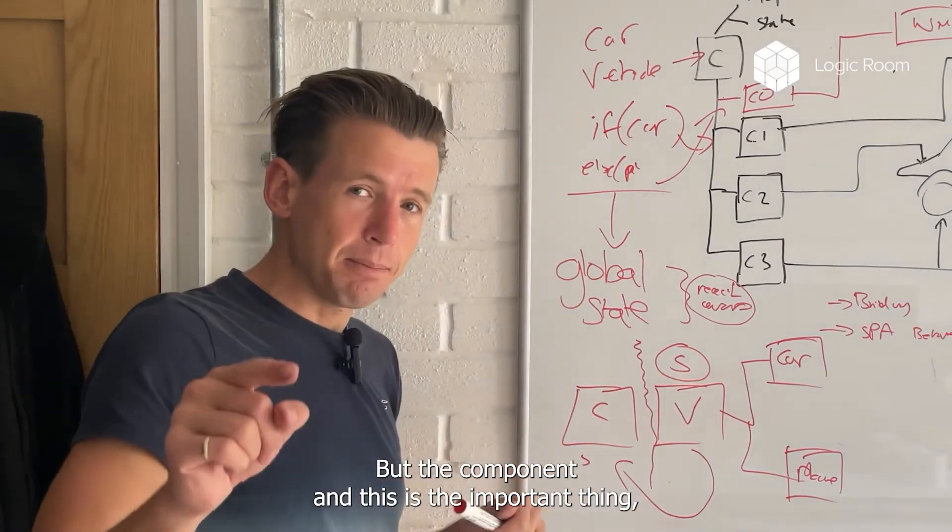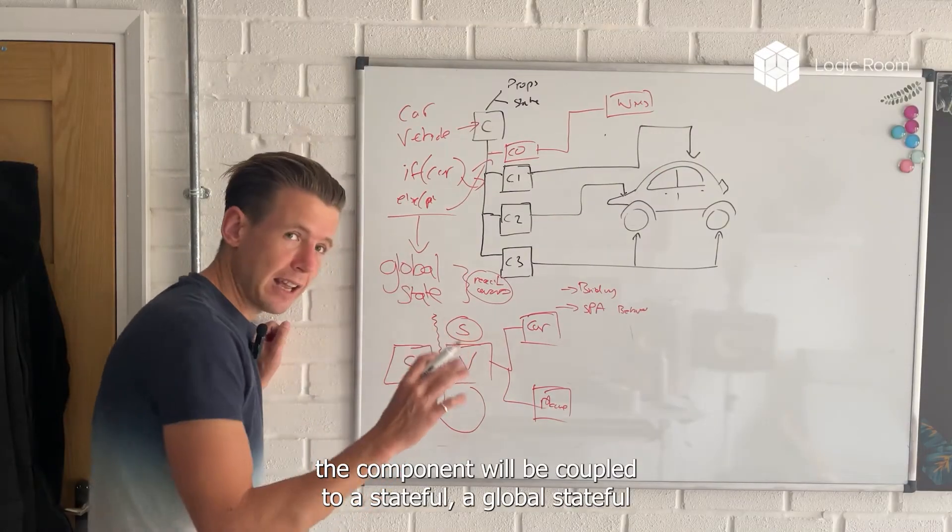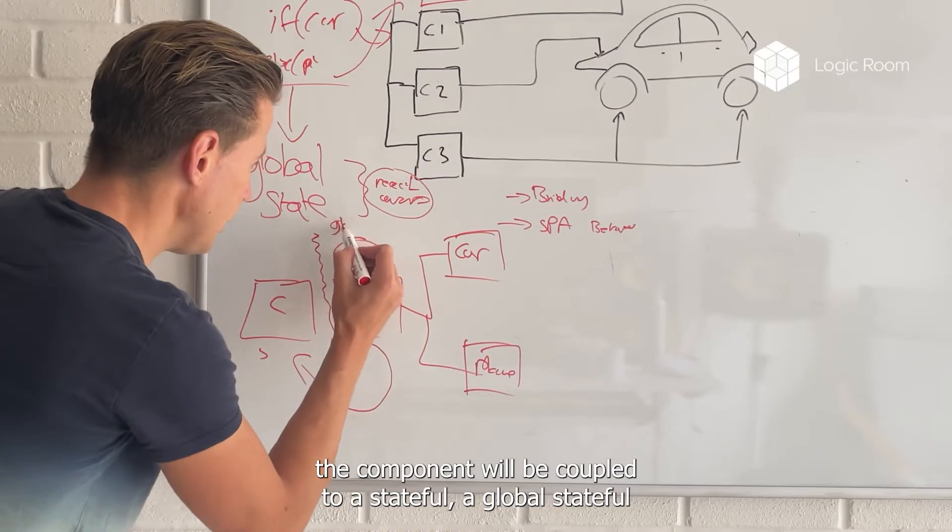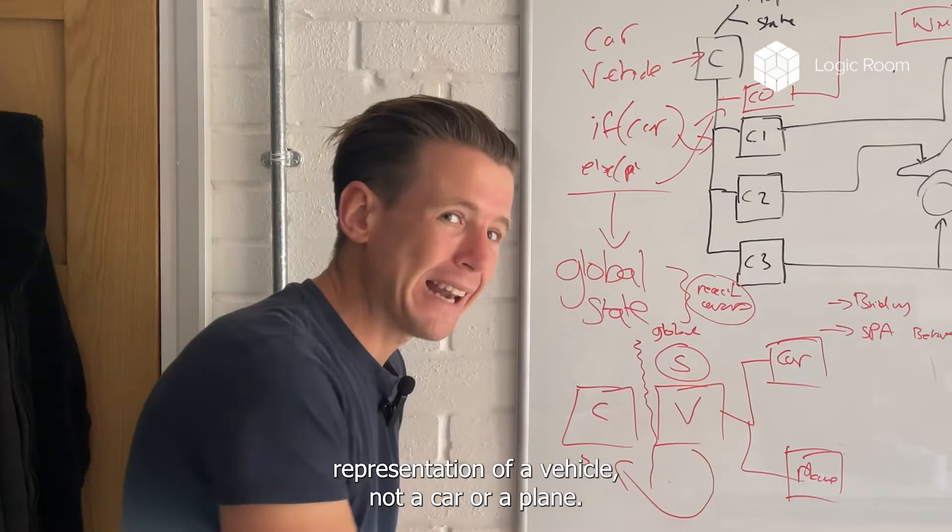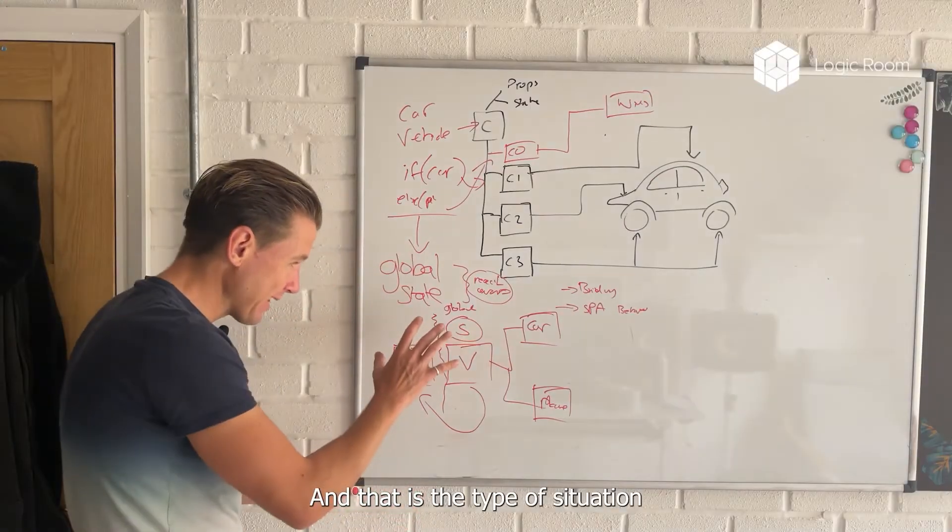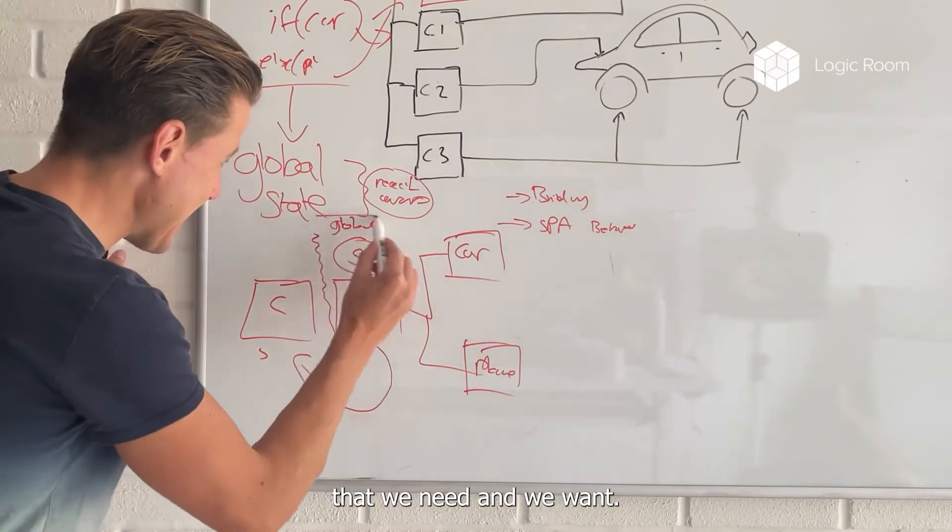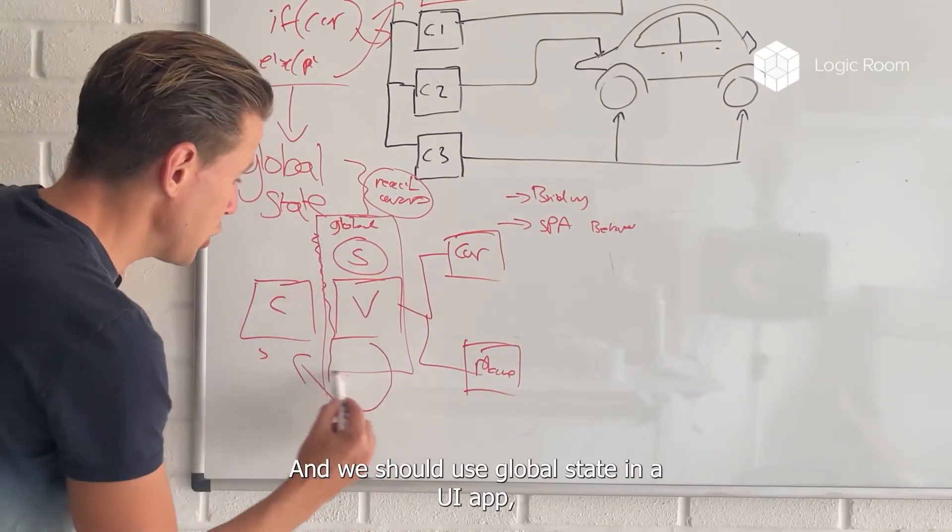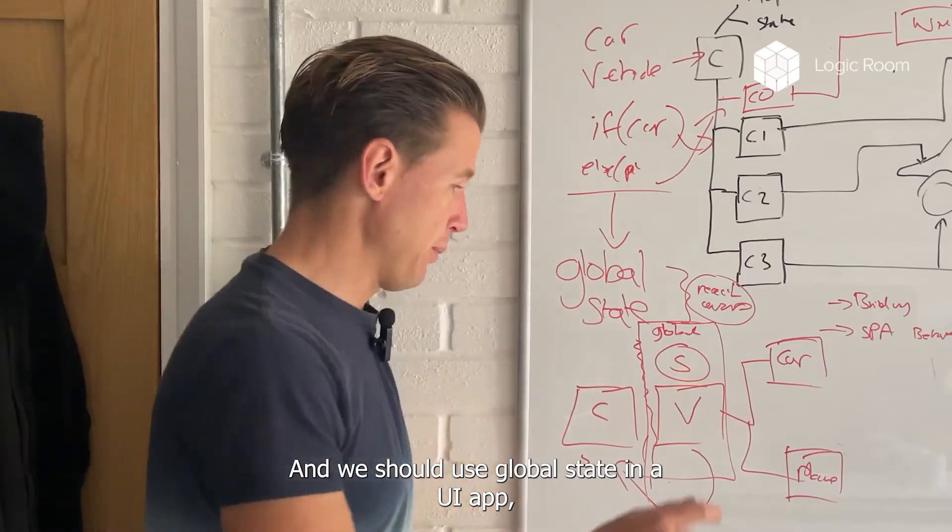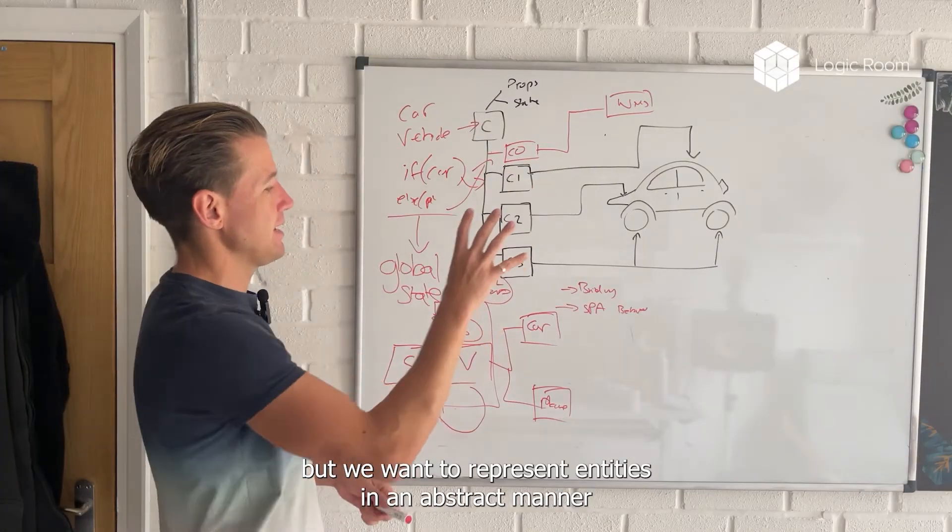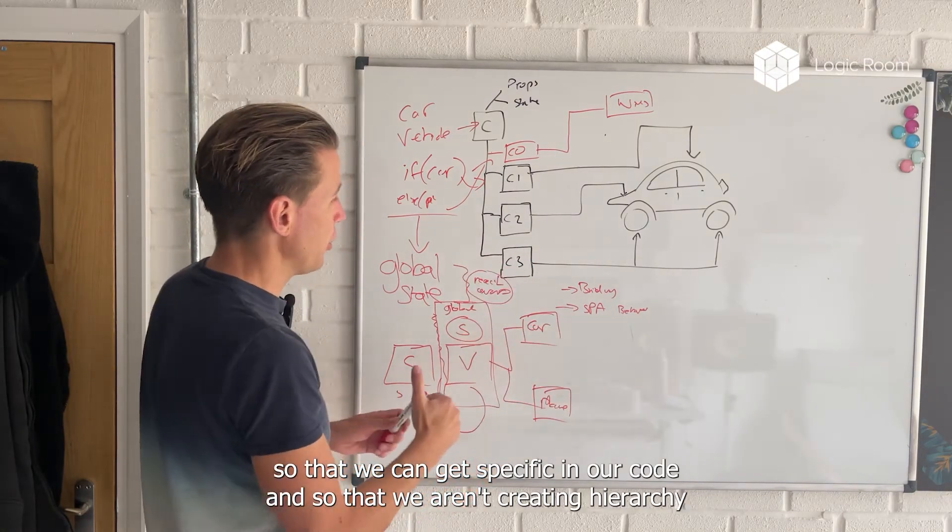But the component, and this is the important thing, the component will be coupled to a global stateful representation of a vehicle, not a car or a plane. And that is the type of situation that we need, and we want, and we should use global state in a UI app, where we want to represent entities in an abstract manner.